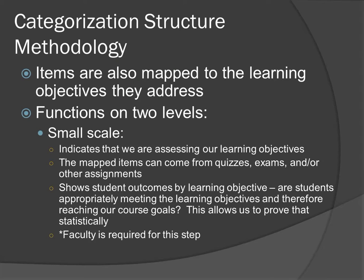The other section of our categorization methodology is mapping items to the learning objectives they address. We all have to have learning objectives for each class session, and we want to make sure that our faculty is appropriately assessing their learning objectives. If they're appropriately assessing their learning objectives, then the indication is that they're appropriately assessing their course goals. If they're reaching those course goals, then they are achieving the competencies of the accrediting body, the program goals, and ultimately the mission. This whole process really ties that all together.